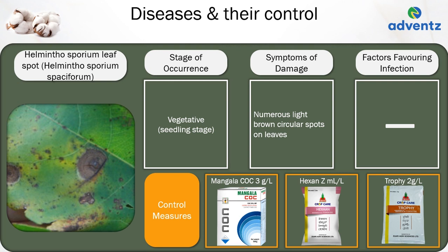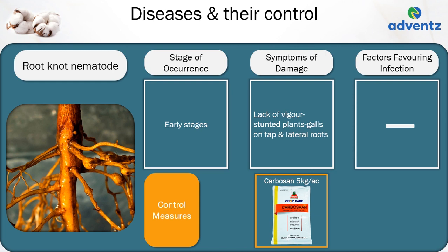The second disease is root knot nematode. It occurs in early stages. The symptoms of damage are lack of vigour, stunted plants, and galls on tap and lateral roots. Control: apply Jai Kisan Carbosan at 5 kg per acre.